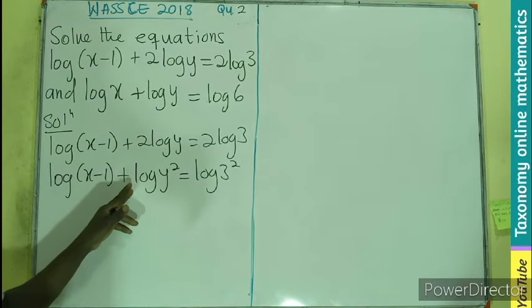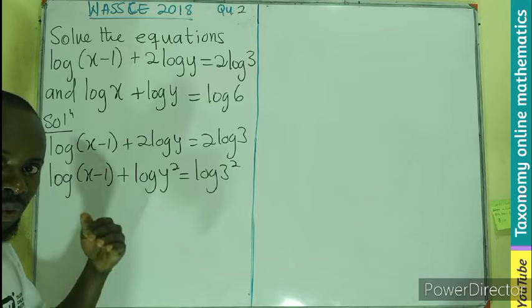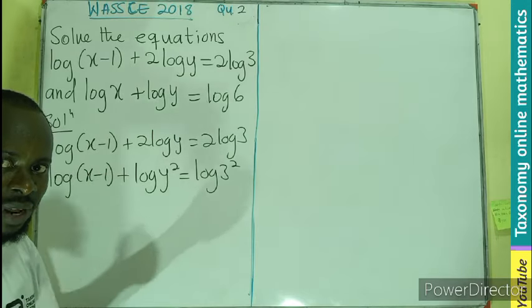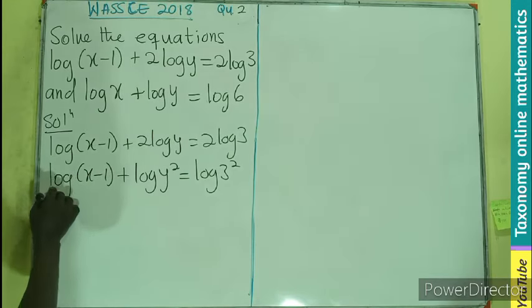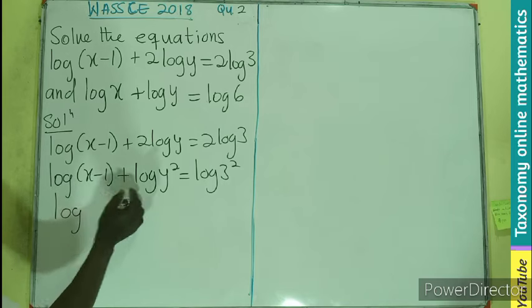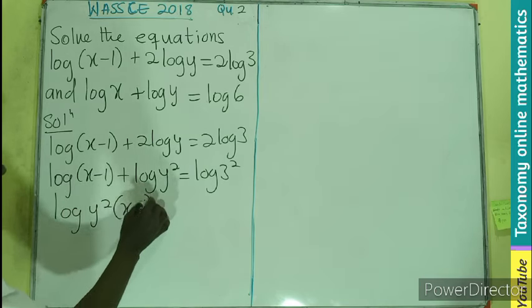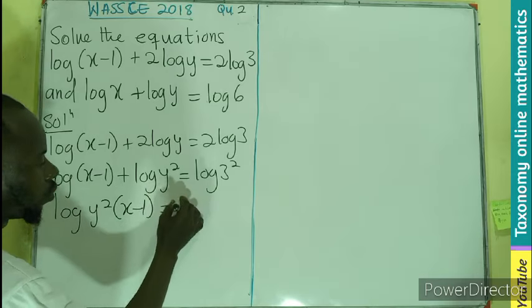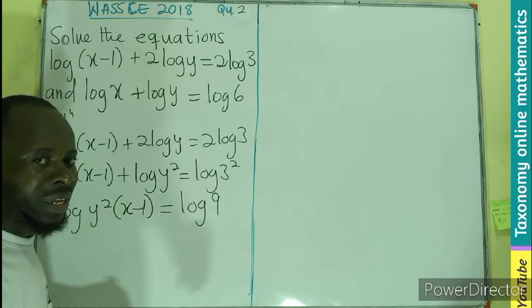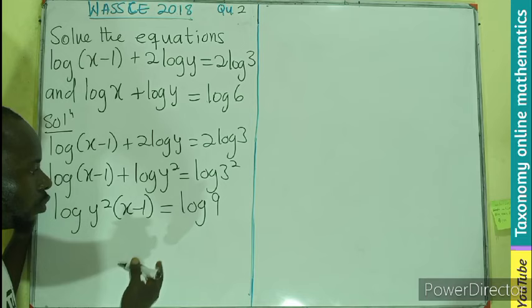But here we are seeing addition. So the addition is going to be a multiplication of the argument. So this gives you log(y² × (x-1)) = log 9, meaning 3 times 3.